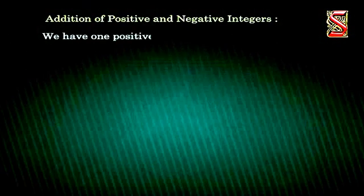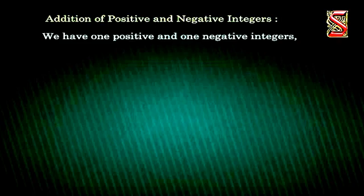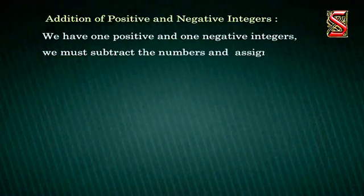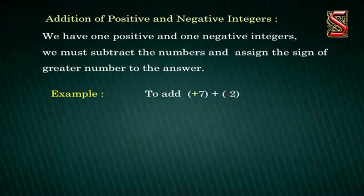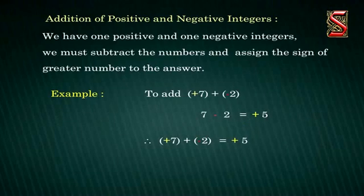When we have one positive and one negative integer, we must subtract the numbers and assign the sign of the greater number to the answer. For example, to add positive seven plus negative two, we have to subtract two from seven and assign the sign of the greater number that is seven, which is positive. Therefore, positive seven plus negative two is equal to positive five.